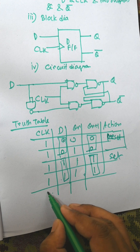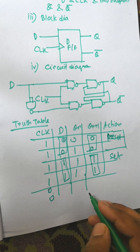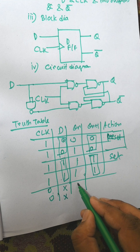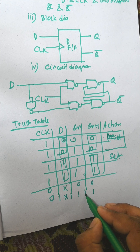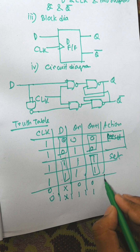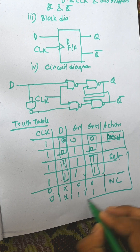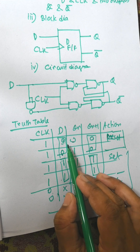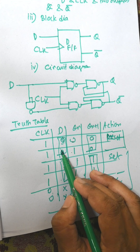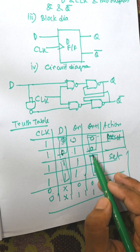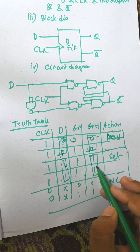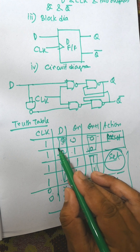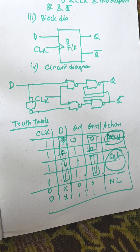For D equal to 0, QN+1 will be 0. For D equal to 1, QN+1 will be 1. That is, when D is 1 it is Set, and for D equal to 0 it is Reset.